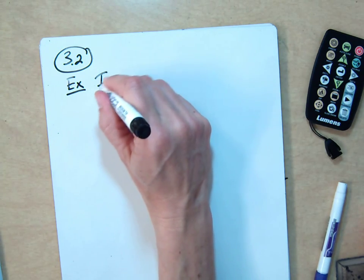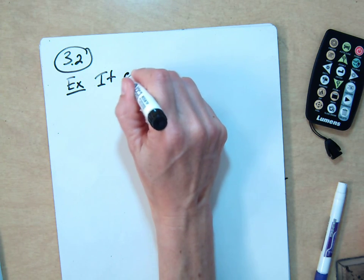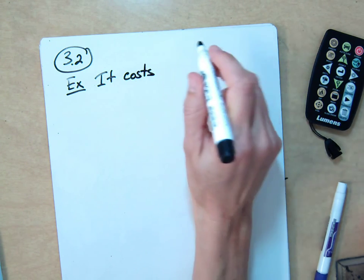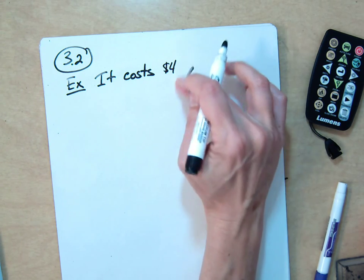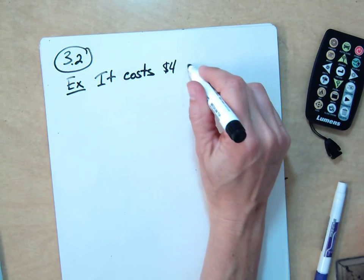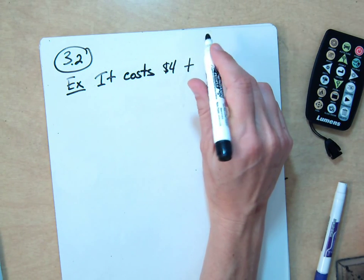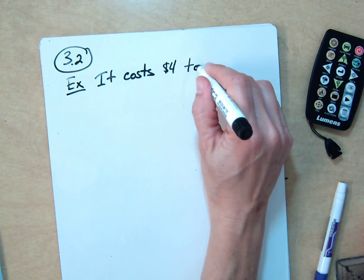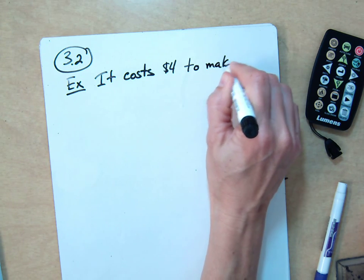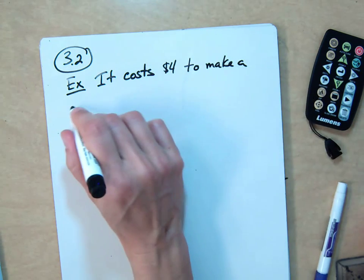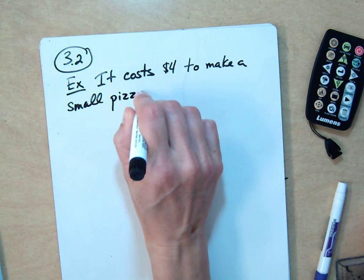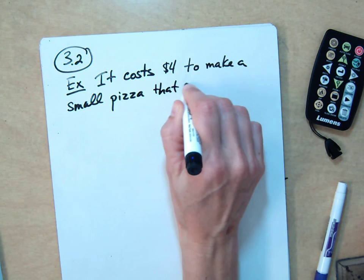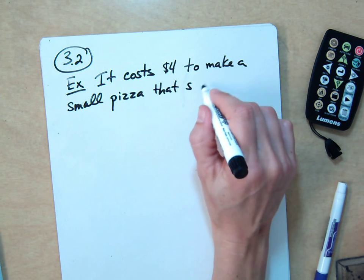So it costs $4. All of these are going to follow a similar format, and you'll end up writing a system that you can solve using elimination. So it costs $4 to make a small pizza that sells for $12.